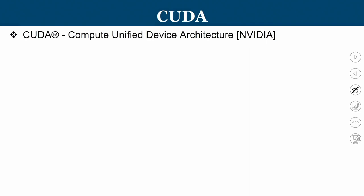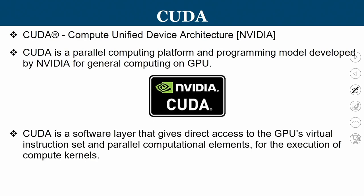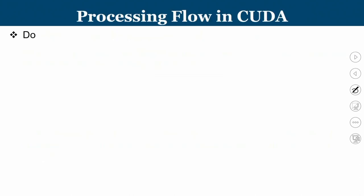Now let us talk about CUDA — Compute Unified Device Architecture — proposed by NVIDIA. It is a parallel computing platform and programming model developed by NVIDIA for general-purpose computing on GPUs. CUDA can also be considered a software layer that gives direct access to the GPU's virtual instruction set and parallel computation elements for the execution of compute kernels. Let us understand how things work with CUDA.